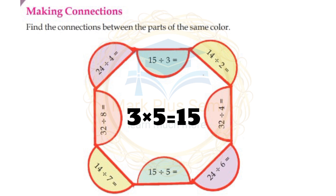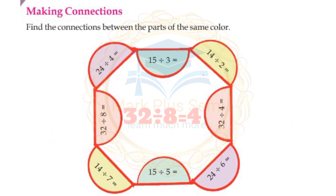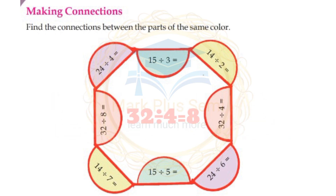The answer is 32 divided by 8. 32 divided by 8 is equal to 4. 32 divided by 4 is equal to 8.